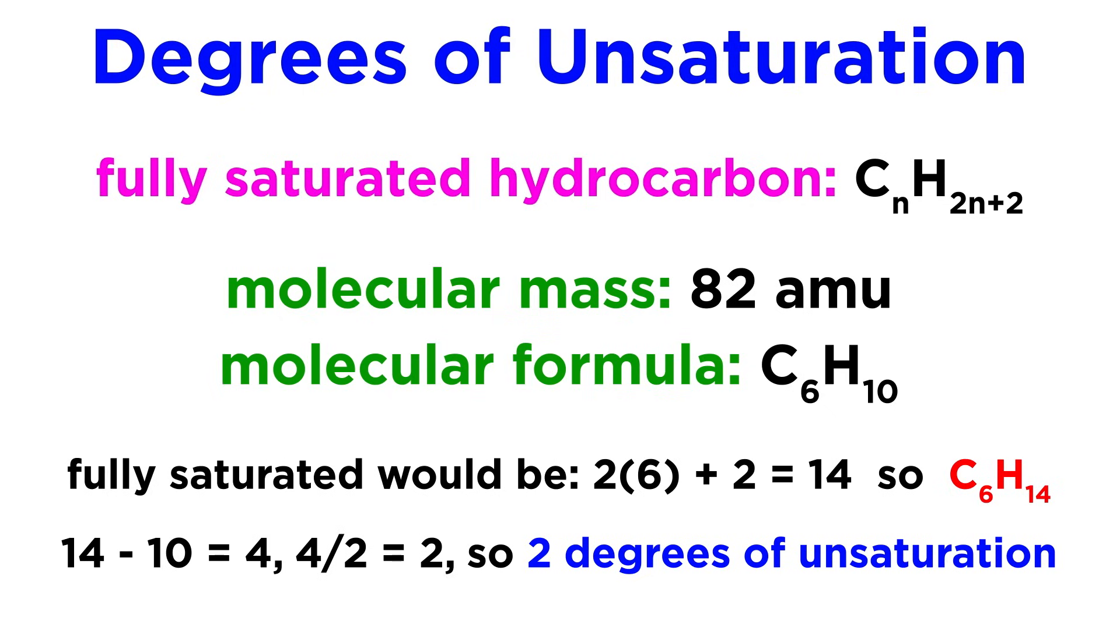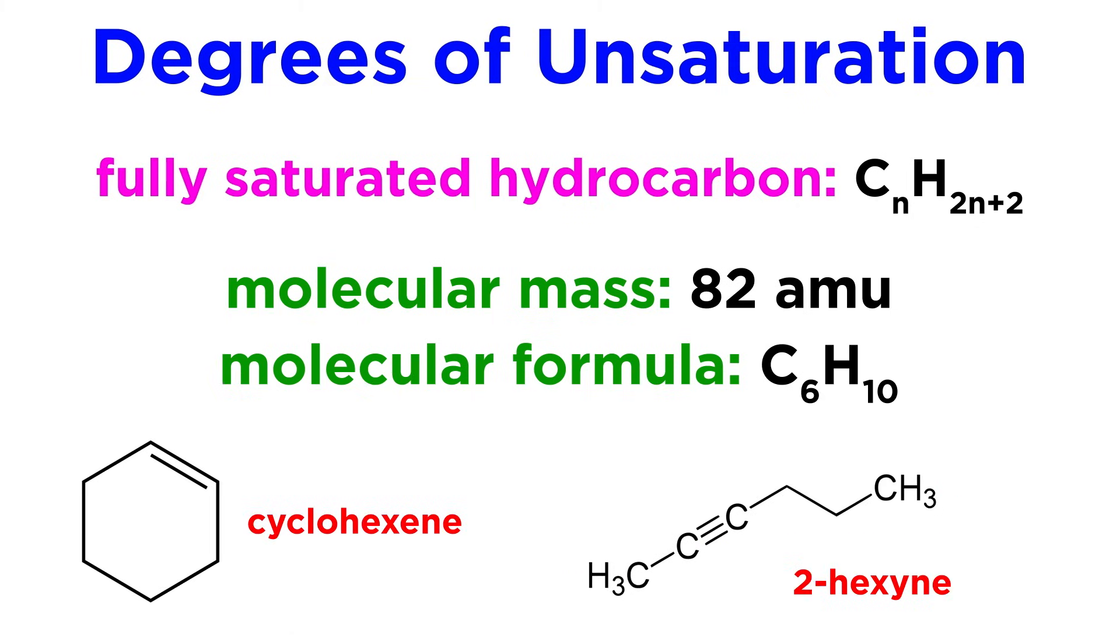This does not tell us precisely what the molecule is, but we know that the molecule must either have two pi bonds, two rings, or one pi bond and one ring. So it could be cyclohexene, it could be hexine, or many other possibilities.